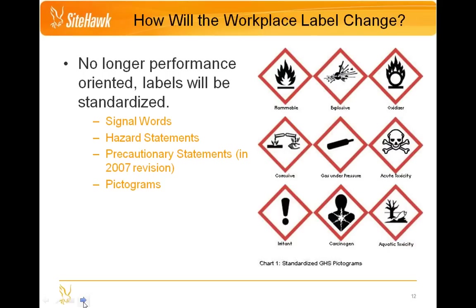There are also going to be new GHS pictograms. Most of these will look familiar. The biggest change is the new red border. But there are three new pictograms that GHS introduces, located on the bottom row of the slide. The first is the exclamation point pictogram, which represents acute hazards such as eye and skin irritants. The second is the silhouette pictogram, which represents chronic hazards such as carcinogens. And finally, the environmental hazard pictogram represents aquatic toxicity.